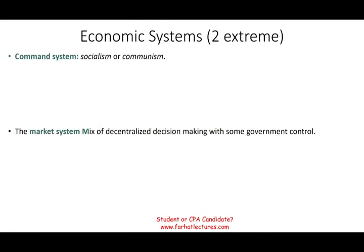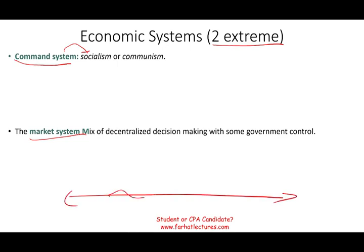There are many economic systems, but we're going to look at the two extremes, with many systems falling in between. We have the command system — one extreme, which is socialism or communism — and the market system, which is essentially capitalism. Those are the two extremes. It doesn't mean there aren't systems in between; there are many combinations of the two, but those are the two extremes.